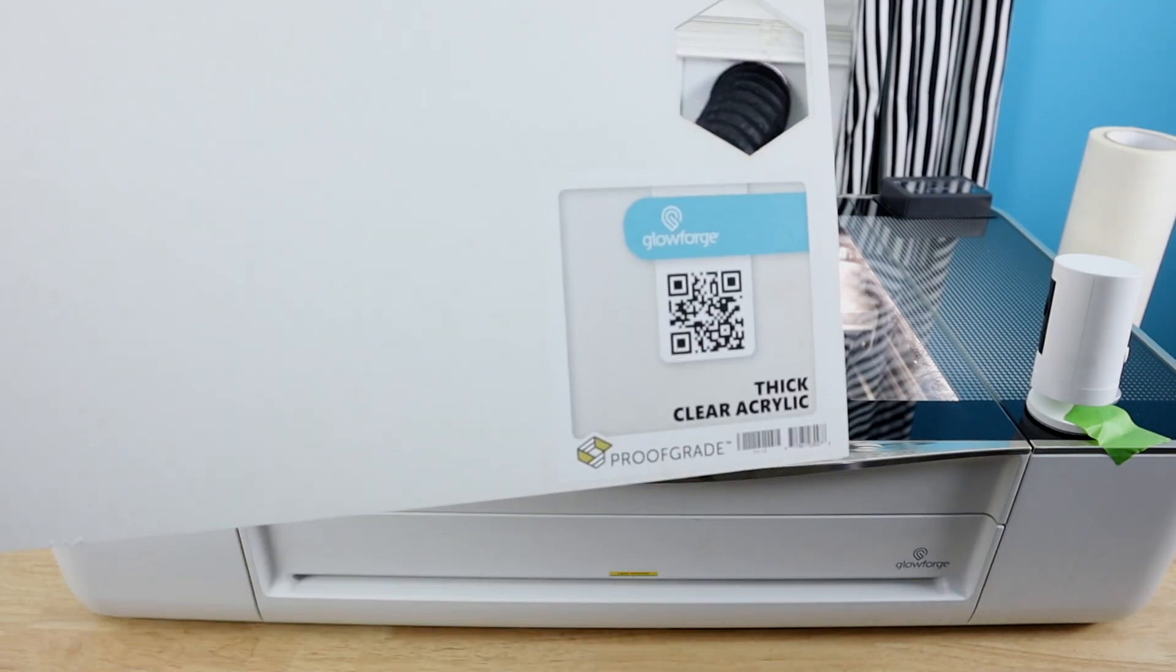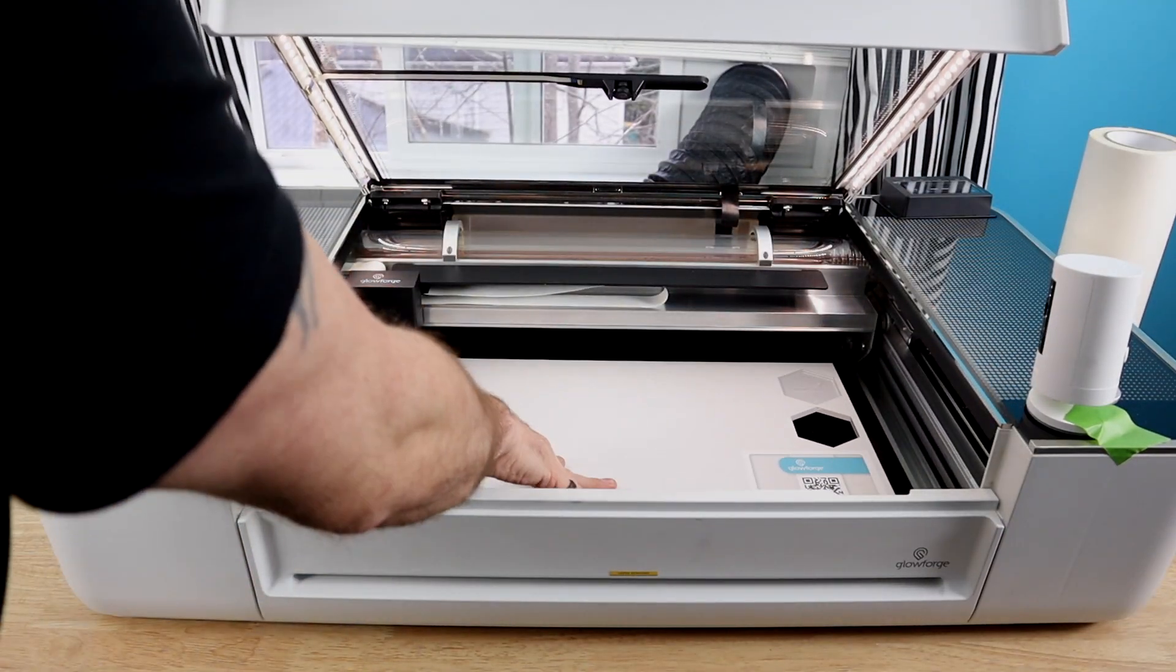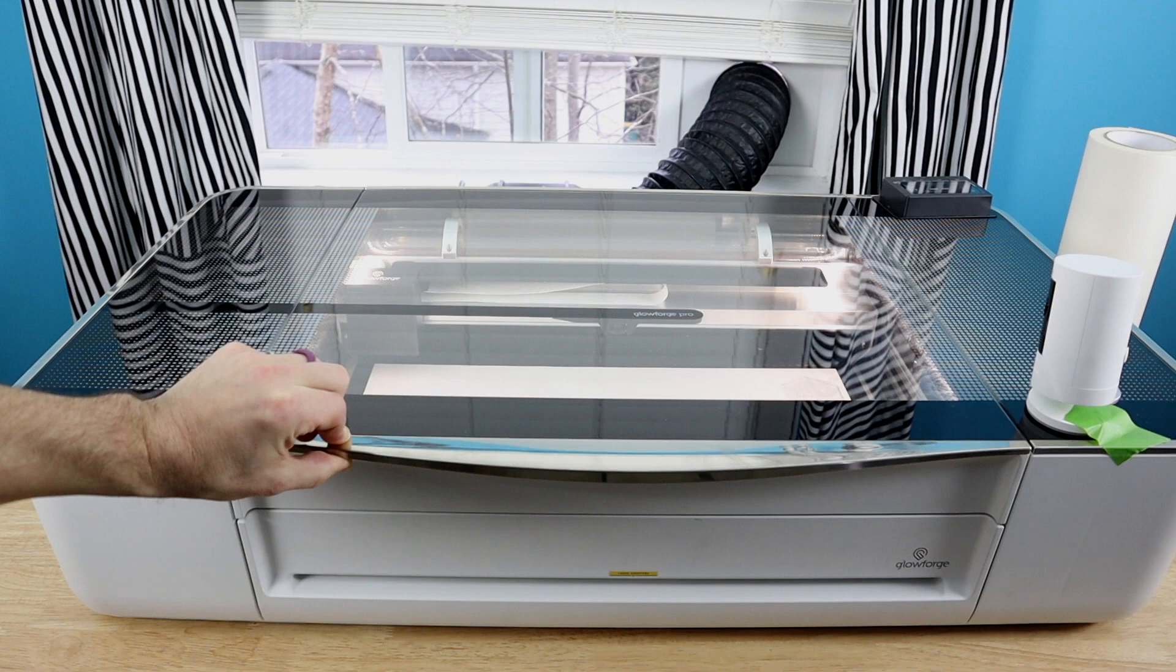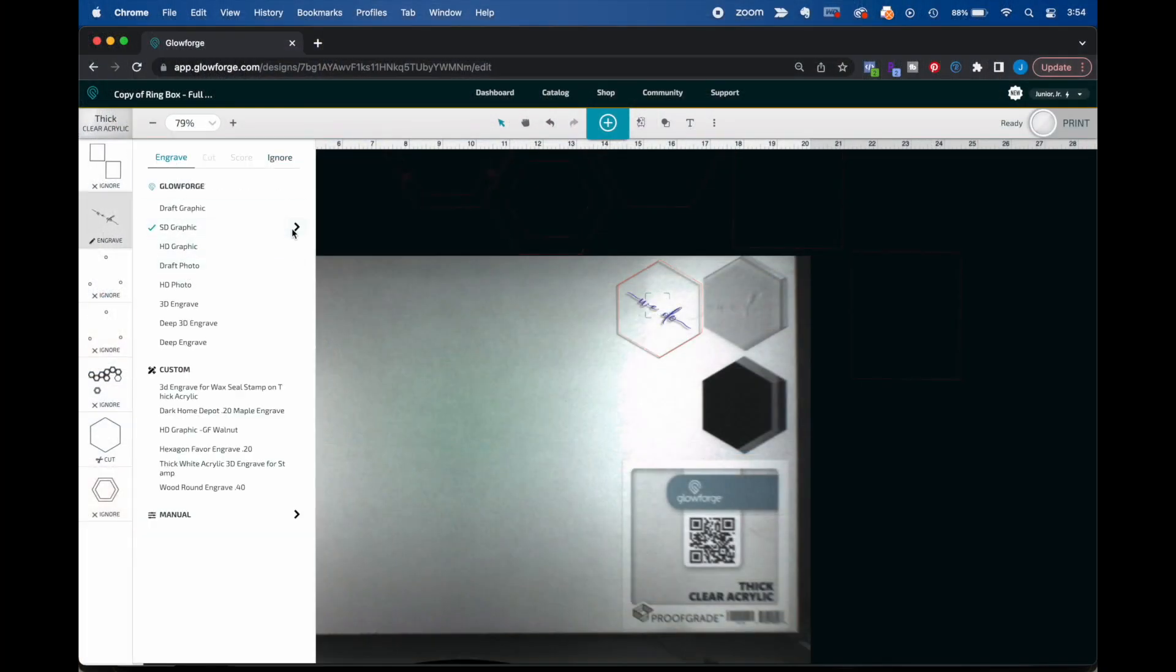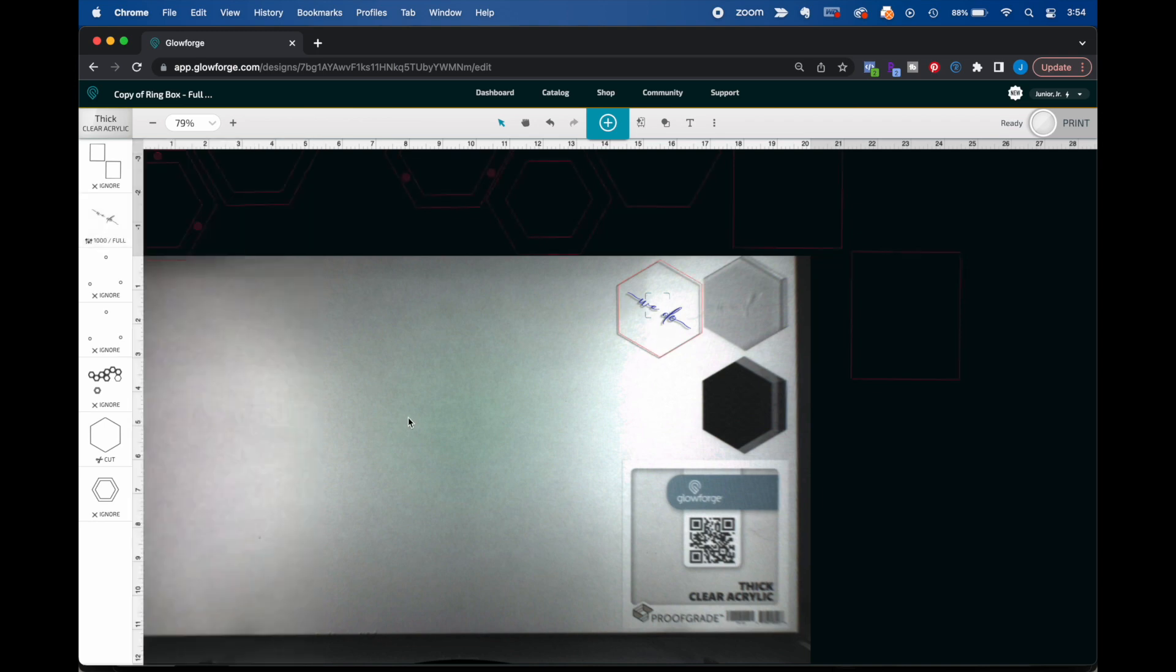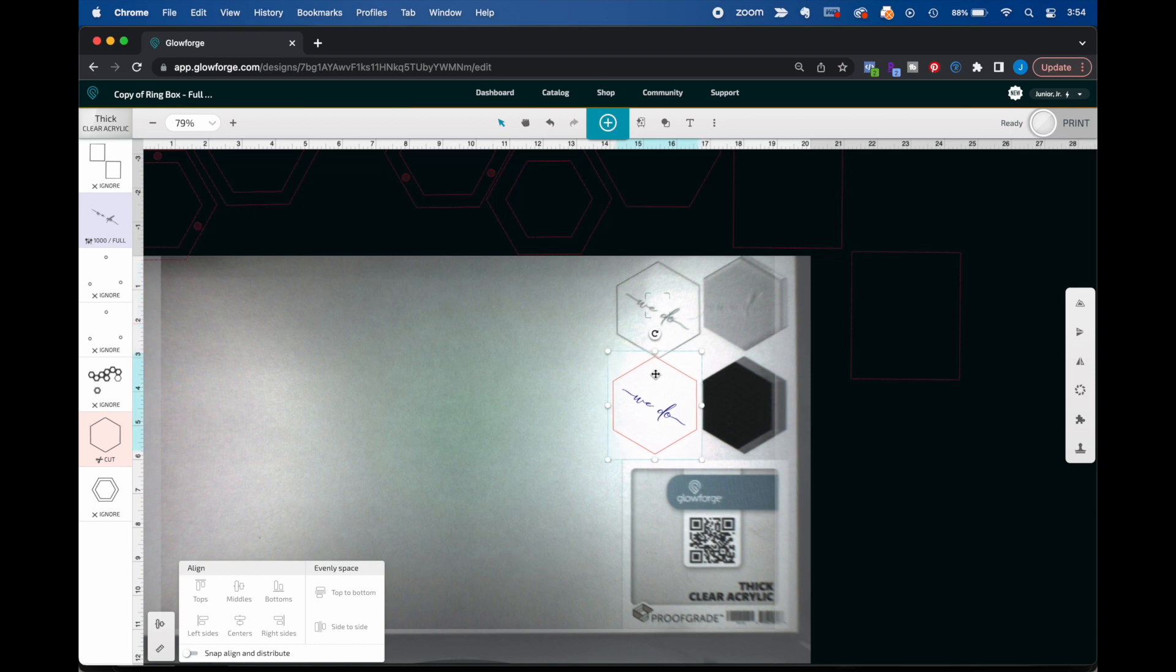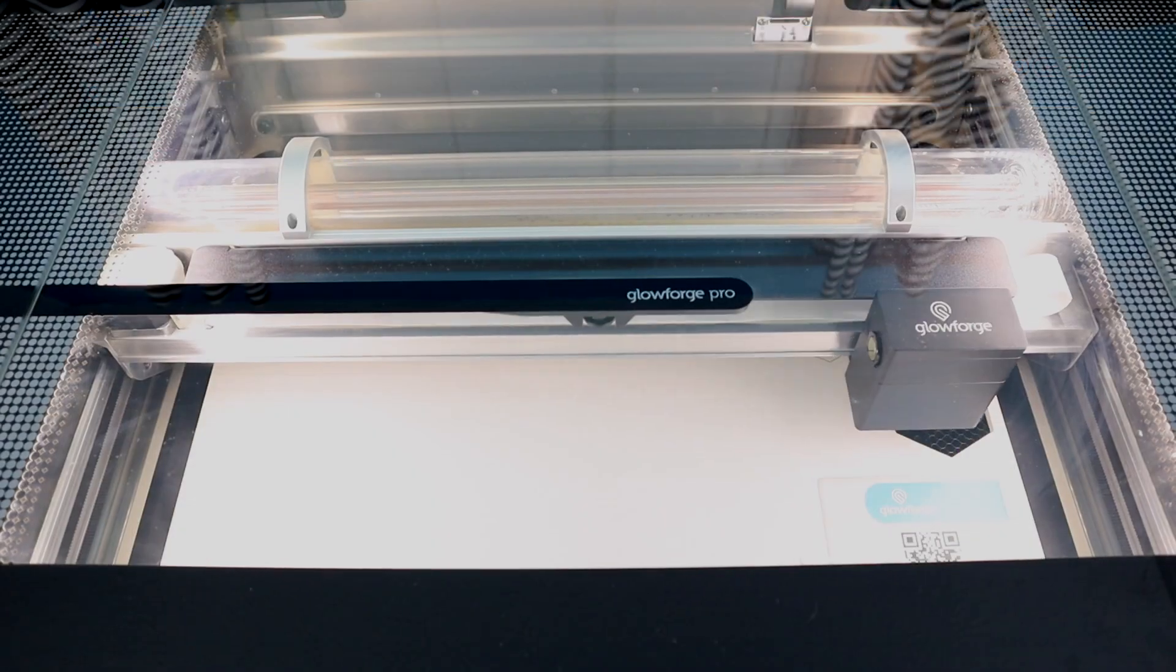This is proof grade, quarter inch, clear acrylic that you just put in your Glowforge, close the lid, and it says, hey, I know what that is. We're using a very simple design, just some words to engrave. And since it's proof grade, we're using the SD graphics settings, but we do increase the LPI because we want a pretty solid engraved on this. As you can see, we did this a few times because one time we forgot to change our cut setting. But of course, it is a proof grade cut as well. And it only takes five minutes.